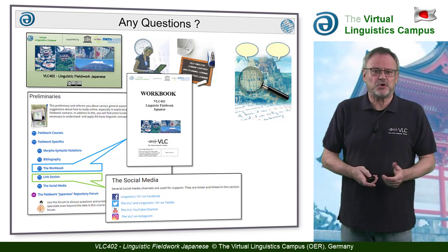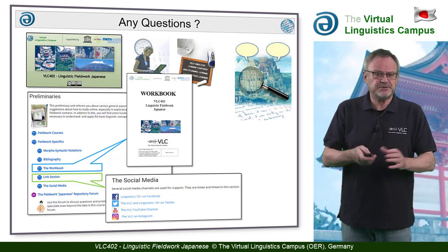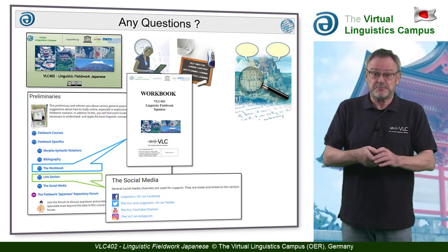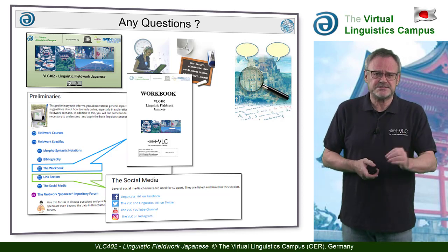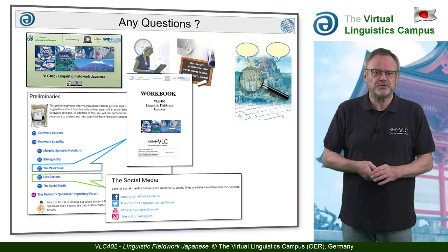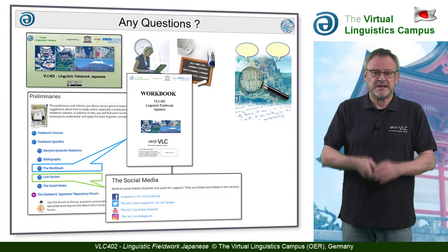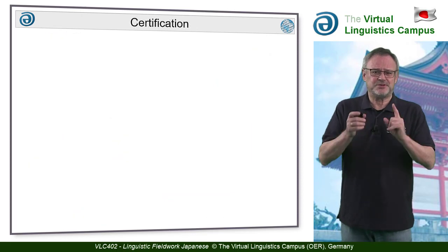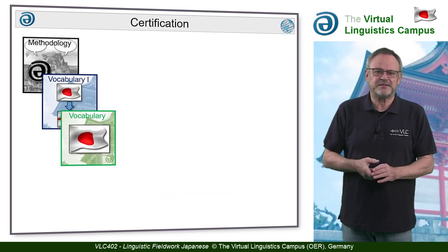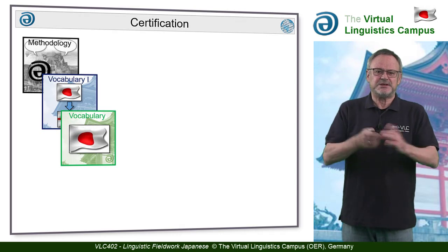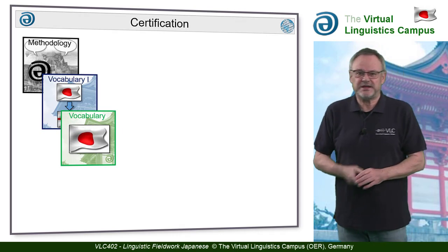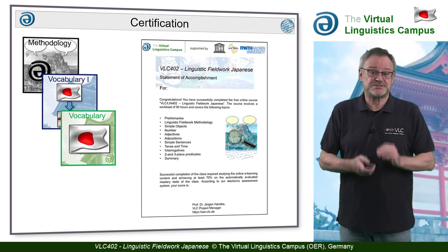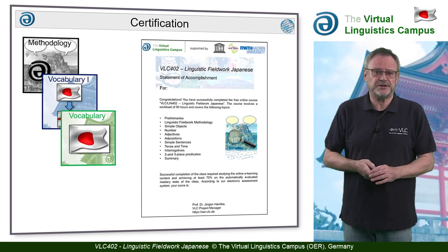The workbook can be accessed or downloaded from the preliminary section, and it summarizes the main aspects of each unit in print. But even more importantly, it contains dozens of tables and charts where you can drop your data. Last but not least, the course is certified. Beyond the digital badges that you can obtain via the mastery tests, each fieldwork class is certified with a statement of accomplishment that lists the content and specifies the workload in hours.